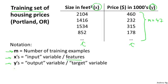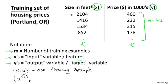A little bit more notation, I'm going to use (x, y) to denote a single training example. So a single row in this table corresponds to a single training example. And to refer to a specific training example, I'm going to use this notation (x^i, y^i).